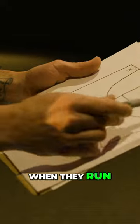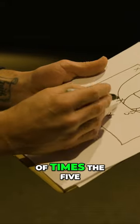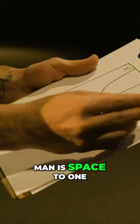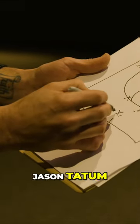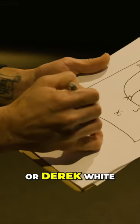Boston Celtics, by the way, when they run their horns action, a lot of times the five man is spaced to one of these corners, and they involve Jalen Brown, Jason Tatum, and either Drew Holiday or Derek White.